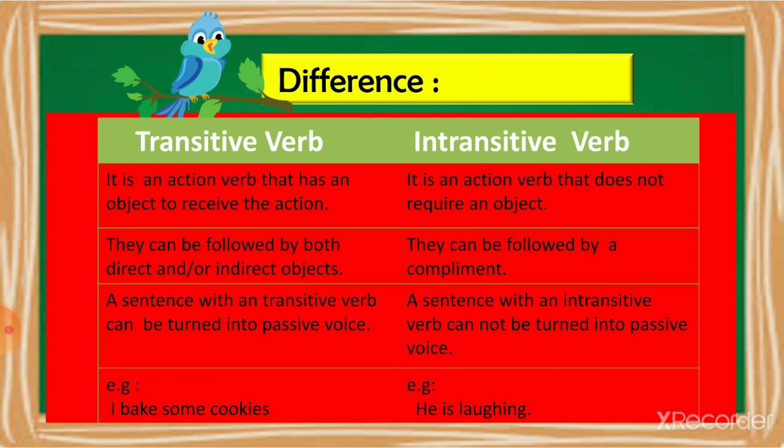We will be learning passive and active voice, and that will be helpful. Example: I bake some cookies — here bake is the verb and cookies is the object, so it is a transitive verb. He is laughing — here laughing is the verb and does not require any object, so it is an intransitive verb. I hope you have understood transitive and intransitive verbs.